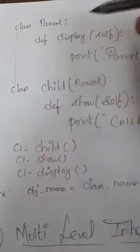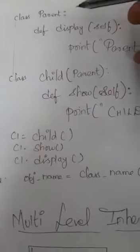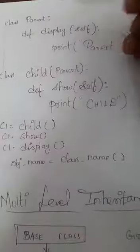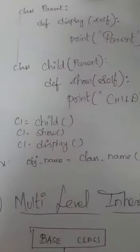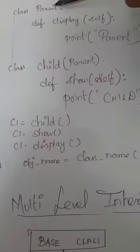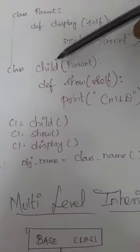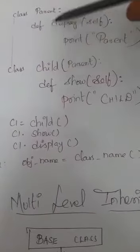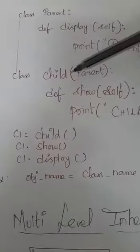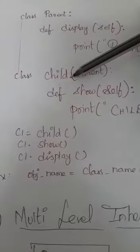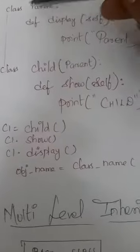We will go with the example of single inheritance. Single inheritance means it has two classes — one is base class and another one is derived class. Here, base class is parent class and derived class is child.